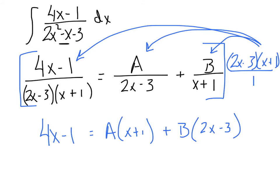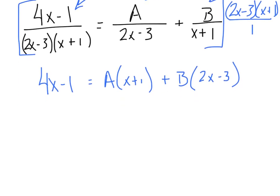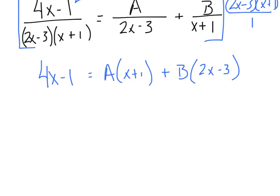Now what I'm going to do is I'm going to pick strategic, convenient values of X. My first one, I'm just going to let X equal what? I'm going to let X equal negative 1 so that this quantity right here zeroes out. Substituting a negative 1 in for all of the X's, I'm going to get negative 5 equals 0 times A plus negative 5B. Divide by negative 5 and I get positive 1 for my B value. Always good when you get positives.